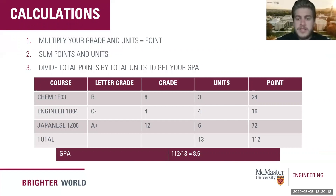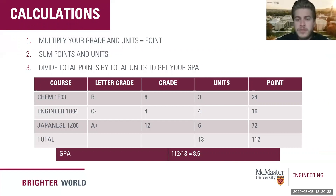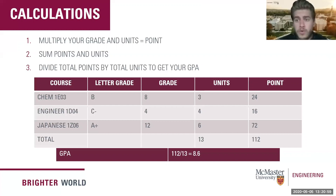Now that you have all the data in place, calculate the points per course by multiplying the grade by the units. For example, Chem 1E03: 8 multiplied by 3 units equals 24 points. Then sum up the points for all courses — in this calculation we have a total of 112 points and 13 units. Finally, divide total points by total units to get your GPA. The result here is an 8.6 GPA.